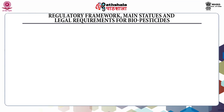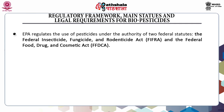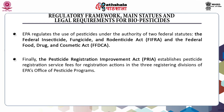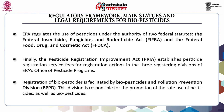Coming to the regulatory framework — main status and legal requirements for biopesticides. The Environmental Protection Agency regulates the use of pesticides under the authority of two federal statutes: the Federal Insecticide, Fungicide and Rodenticide Act (FIFRA) and the Federal Food, Drug and Cosmetic Act (FFDCA). The Pesticide Registration Improvement Act (PRIA) establishes pesticide registration service fees for registration actions in the three registering divisions of EPA's Office of Pesticide Programs. Registration of biopesticides is facilitated by the Biopesticides and Pollution Prevention Division (BPPD), which is responsible for promotion of the safe use of pesticides as well as biopesticides.